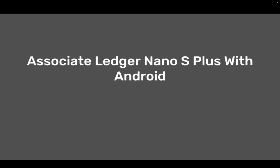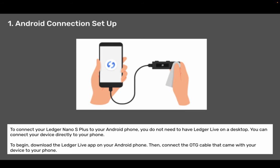Associate Ledger Nano S Plus with Android. Step one: Android connection setup. To connect your Ledger Nano S Plus to your Android phone, you do not need to have Ledger Live on a desktop. You can connect your device directly to your phone. To begin, download the Ledger Live app on your Android phone. Then connect the OTG cable that came with your device to your phone.